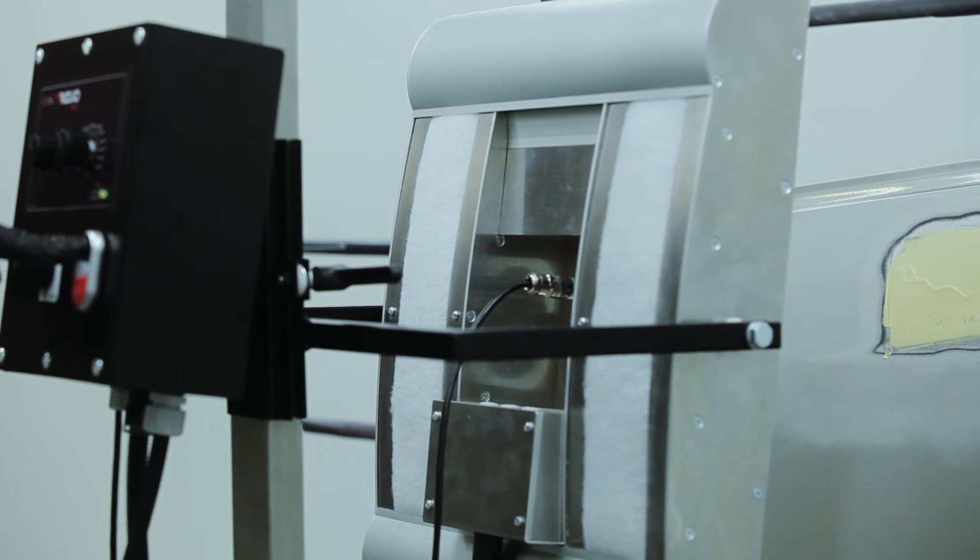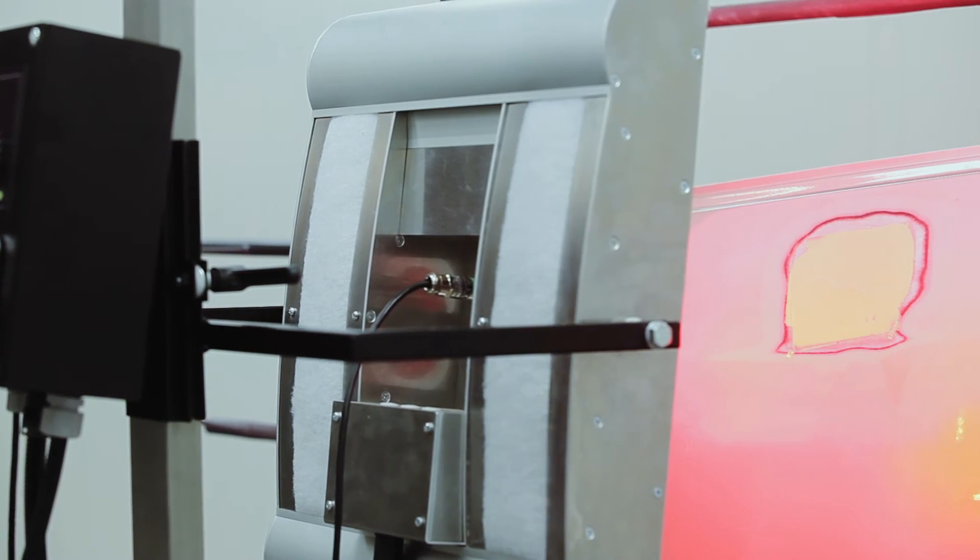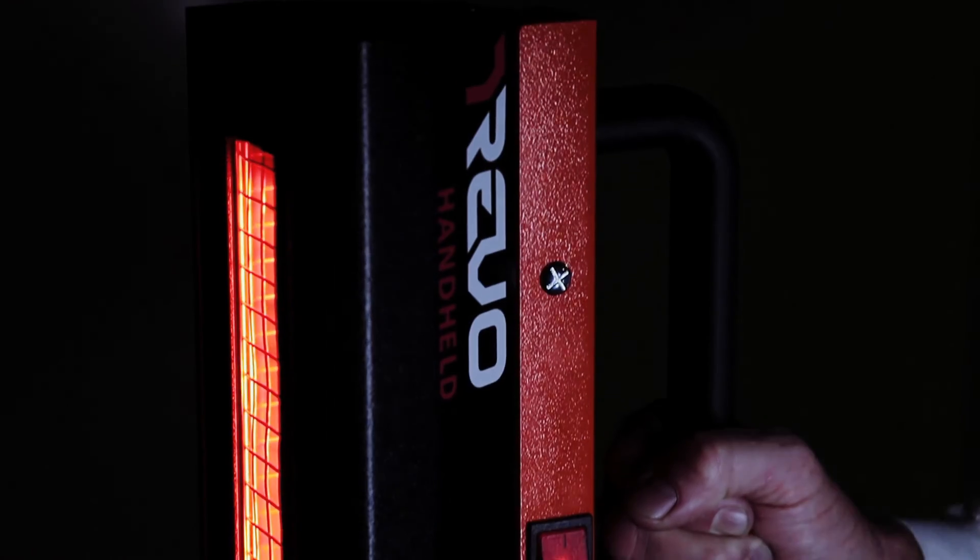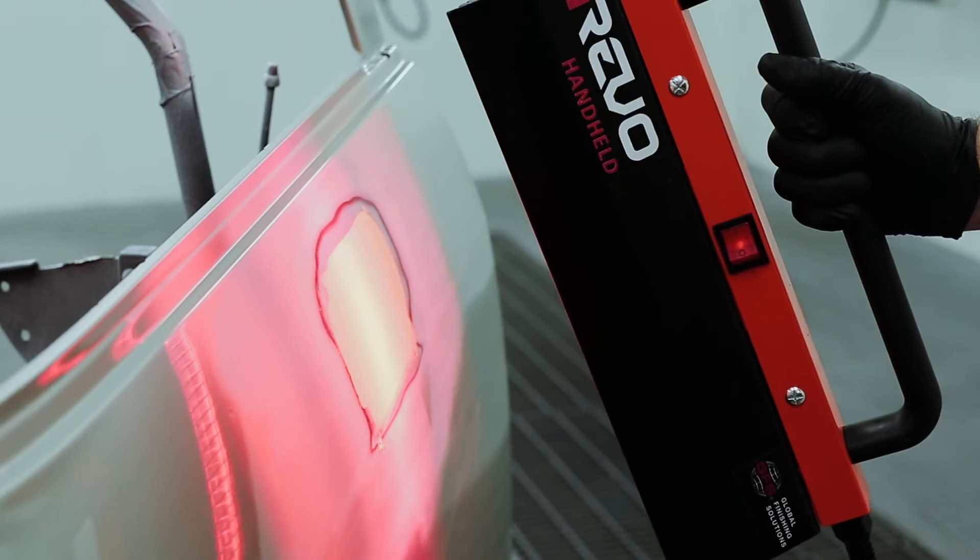The Revo Spot is excellent for curing small areas in minutes, such as drying primer on a vehicle. The Revo systems save you time and money, and produces high-quality repairs.